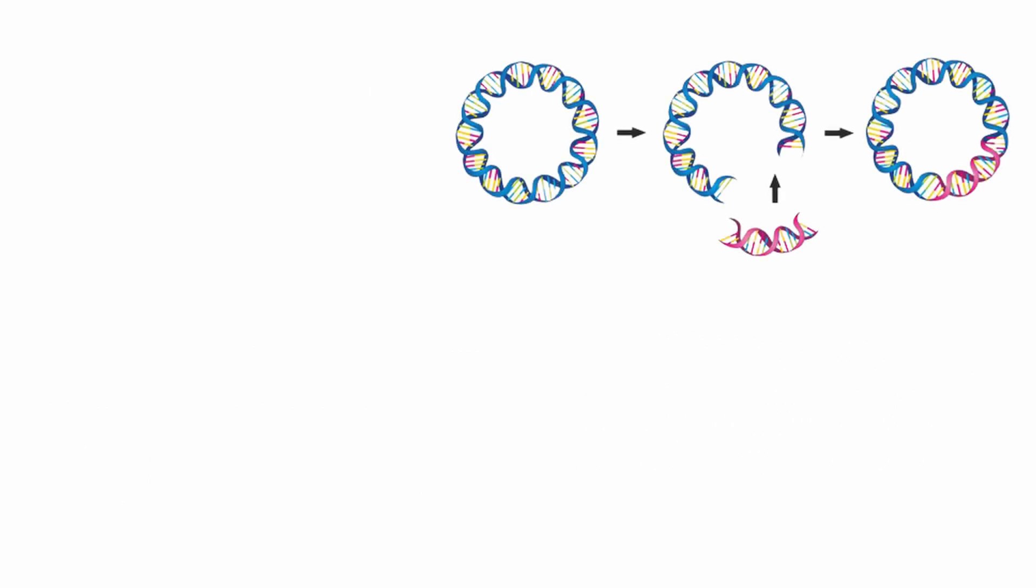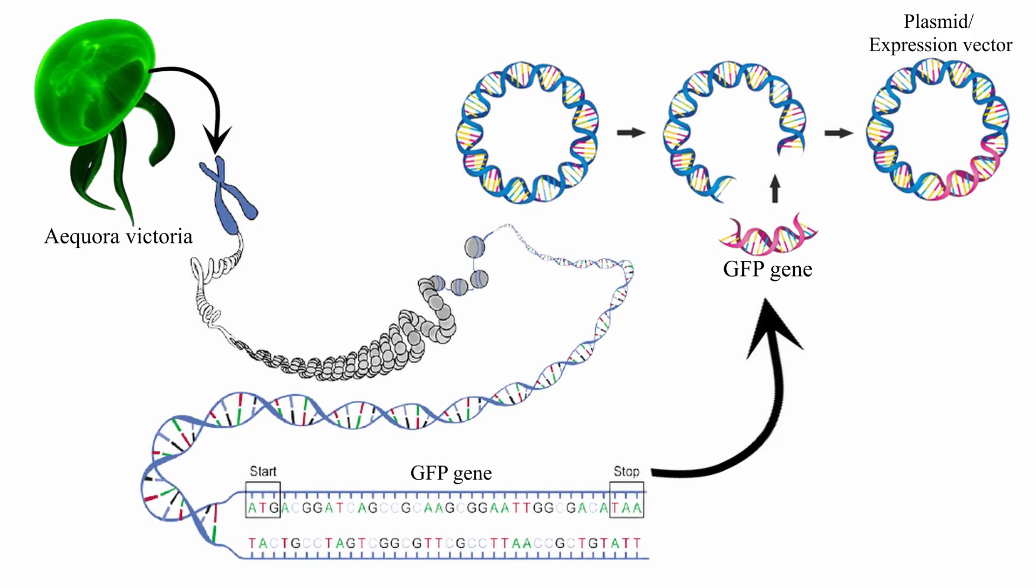Prior to the mutation step we had already made this plasmid expression vector with the GFP gene from the jellyfish Aequorea Victoria built into it. The gene product from this GFP gene is a relatively small protein that can spontaneously emit green light when excited by blue light in the presence of oxygen. Therefore the name Green Fluorescent Protein.